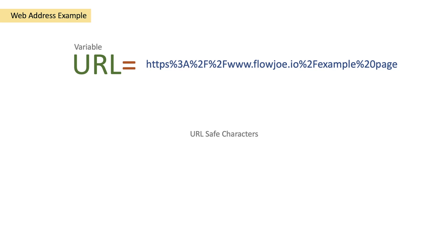What do I mean by URL-safe characters? The colon is equal to %3A, so we've got the https colon but it's been replaced with %3A for URL-safe characters. Then we've got the forward slash, which is %2F, so %3A%2F%2F represents colon forward slash forward slash.